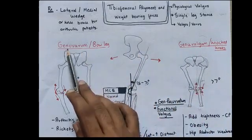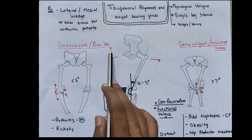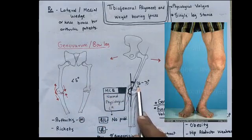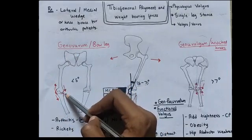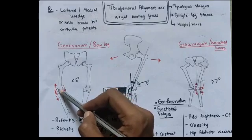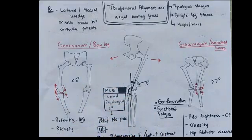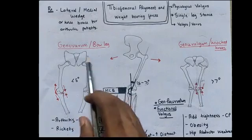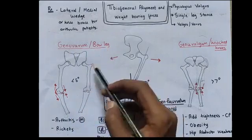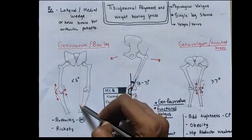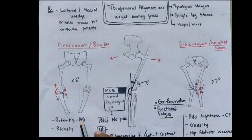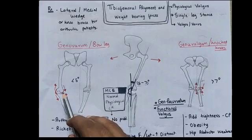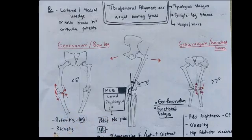Moving to the other side — genu varum, or bowleg. Here the angle between the femur and tibia is reduced below 5 degrees. It is called bowleg because of its bow shape. The common reasons for genu varum are arthritis, mostly occurring on the medial side where wear and tear of the joint happens, and also rickets.